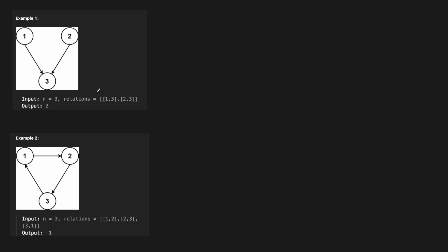In the first example, we have three courses: one, two, and three. For courses one and two, there are no prerequisites — there's no inbound edge on the graph they've drawn. For course three, we need to take course one and course two. So in the first semester, we take these two courses, and now that we've done that, we can take course three in the second semester. That's how we get the answer of two.